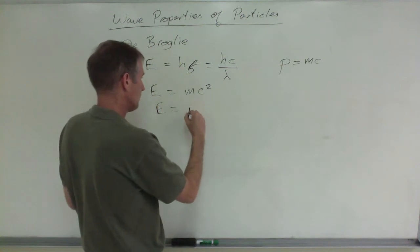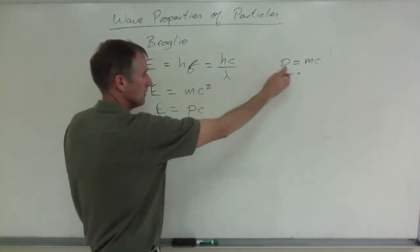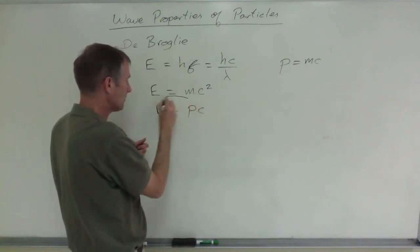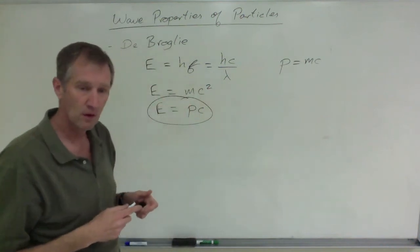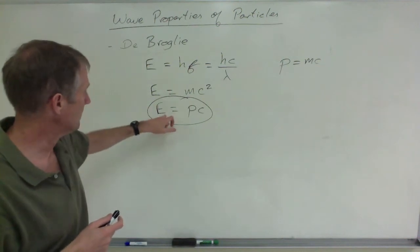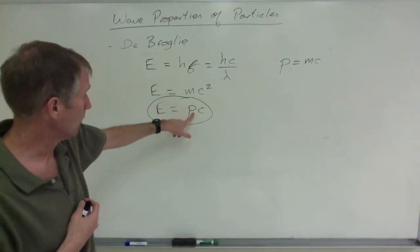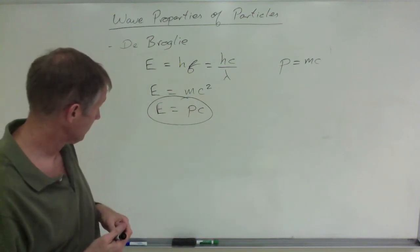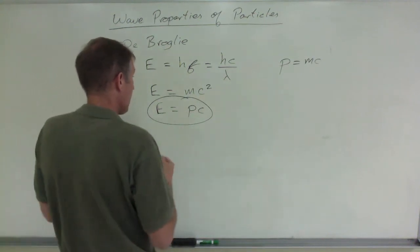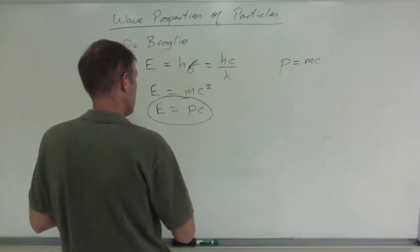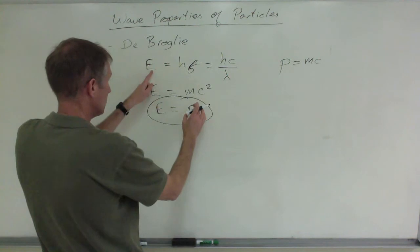Again, this is mc, and you still have another c because it's c squared. This is an equation you want to remember. This is the energy of a photon. You could solve now for the momentum of a photon. Now I can put this equal to that, energy energy energy PC.